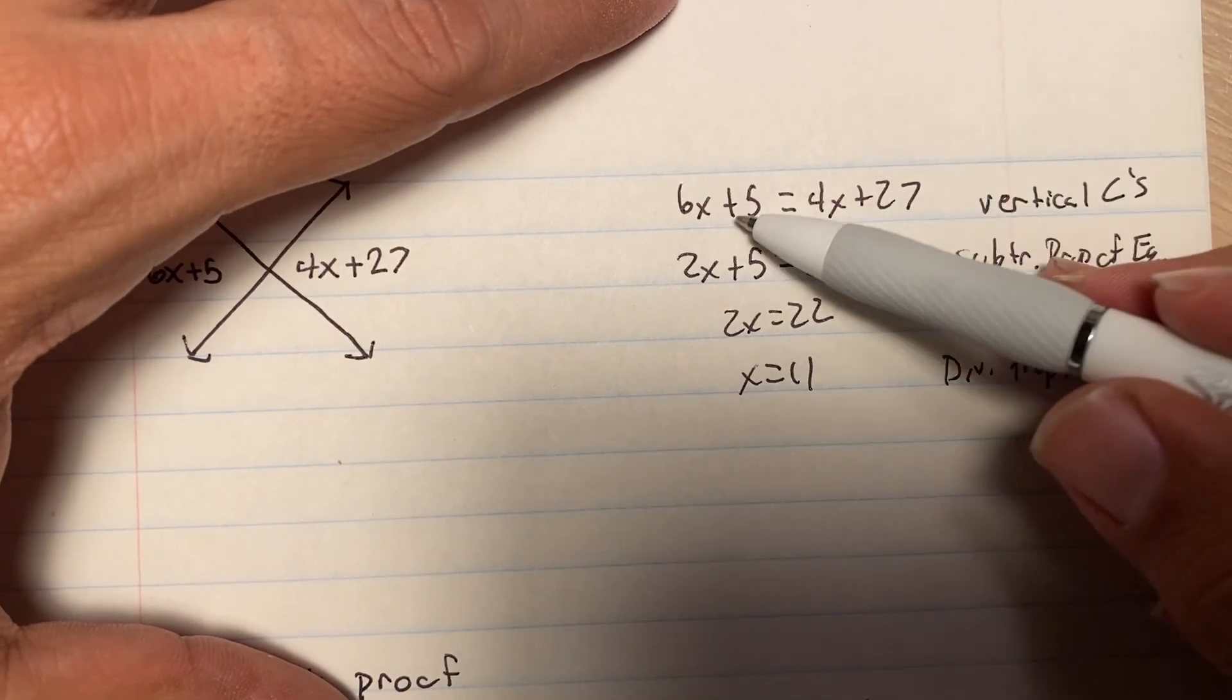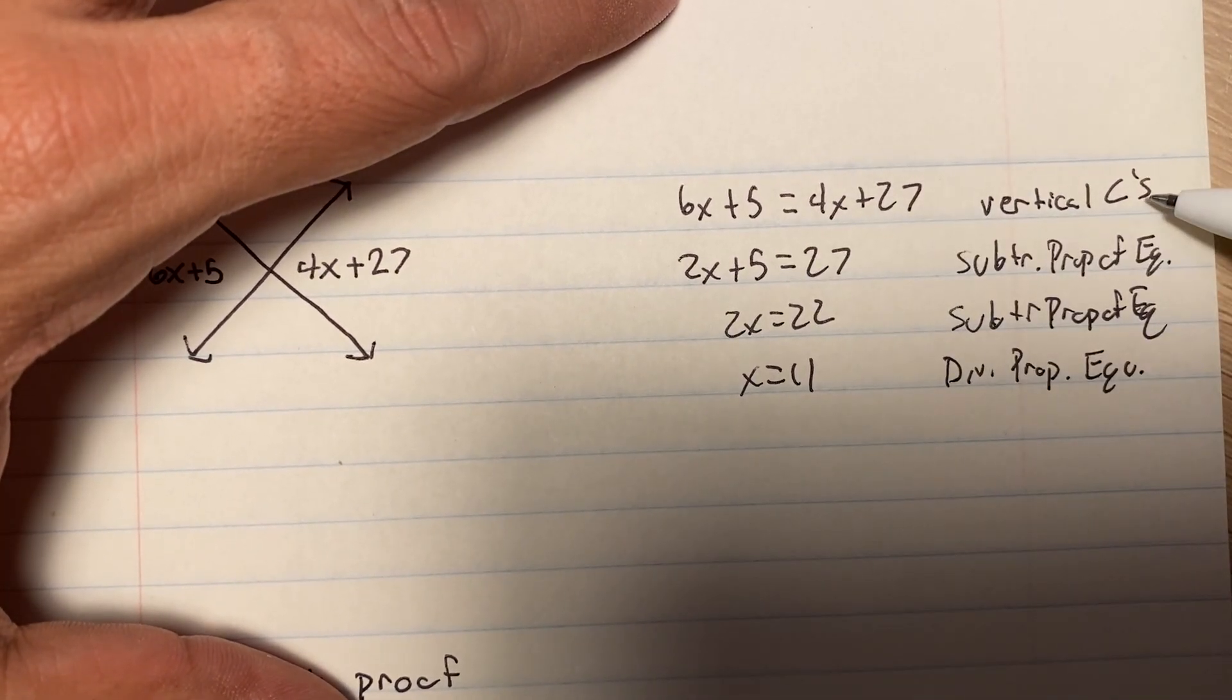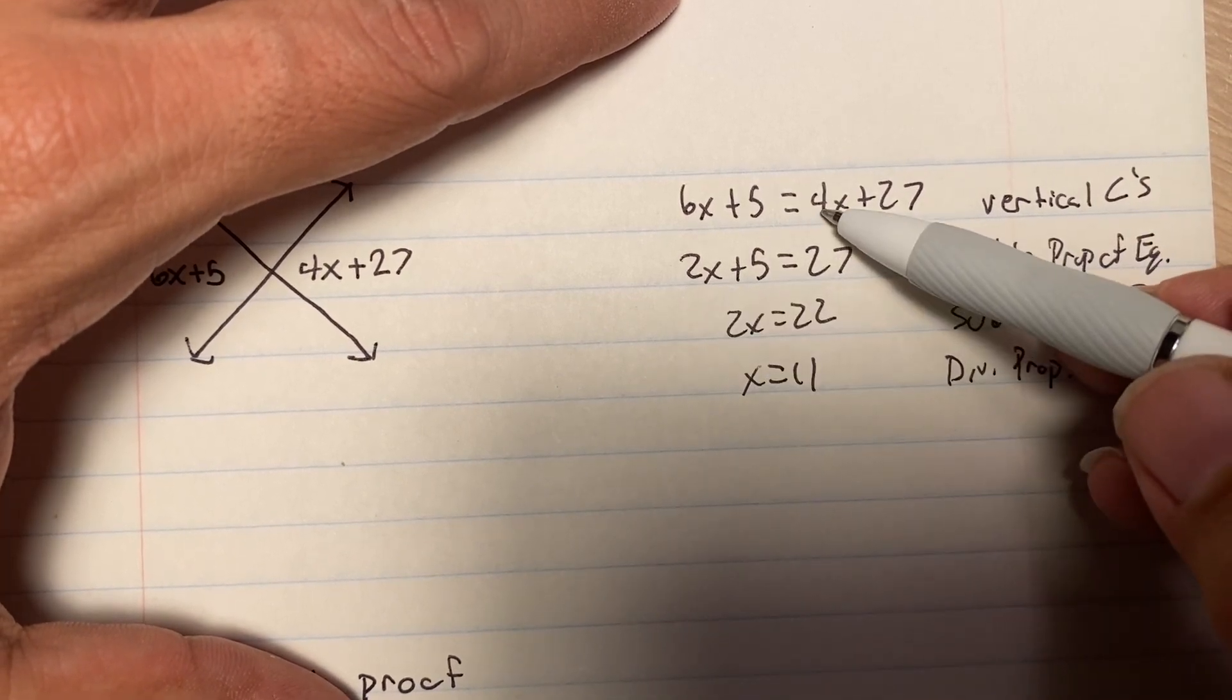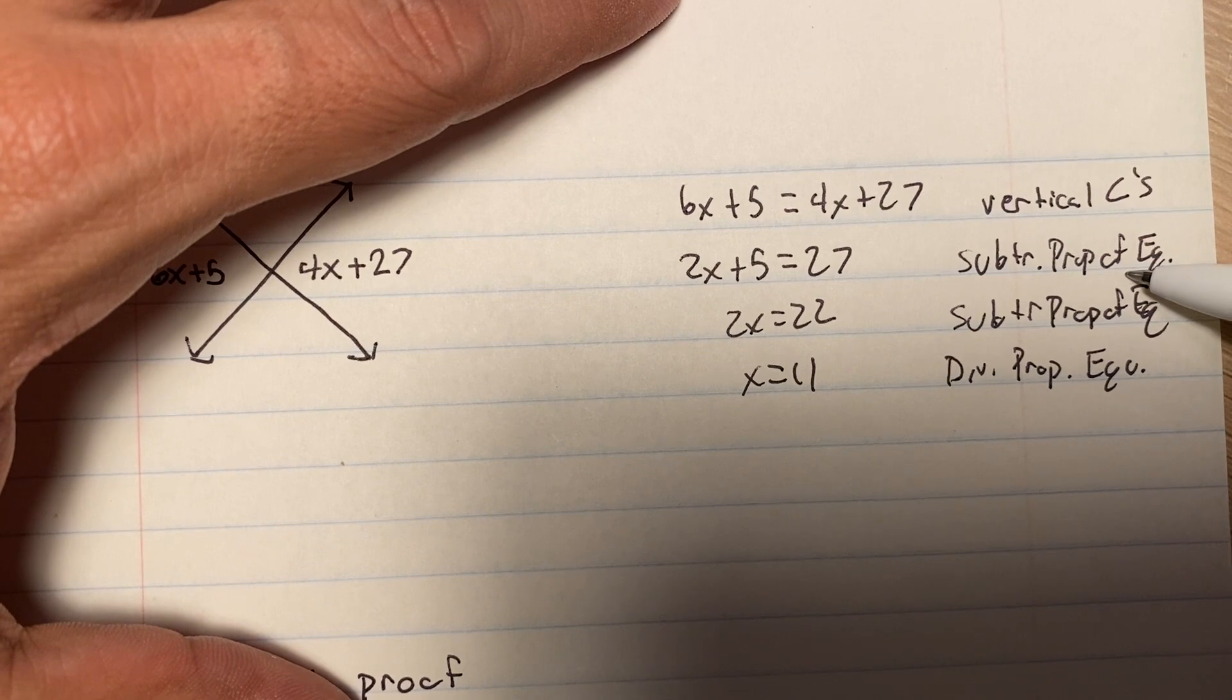Okay, so here would be, how do you know they're equal? Vertical angles are equal. Oh, okay. Wait, how'd you get the 2x here? Where'd the 4x go? I did the subtraction property of equality.